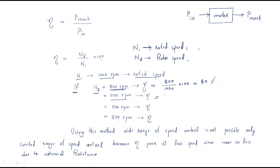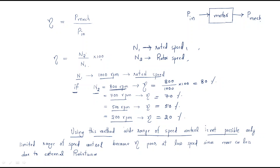If the rotor rotates at 700 rpm, then efficiency is 70 percent. If it rotates at 500 rpm, efficiency is 50 percent. If it rotates at 200 rpm, efficiency is 20 percent. So the rotor speed decides the efficiency of the motor. Using this method, a wide range of speed control is not possible — only a limited range of speed control is possible. This is an important point.